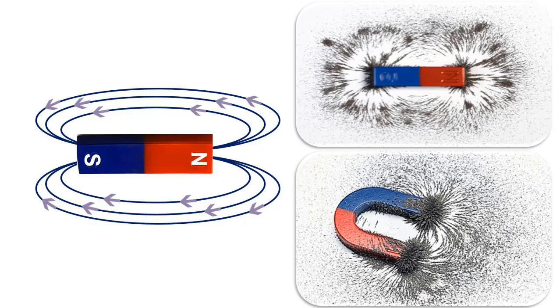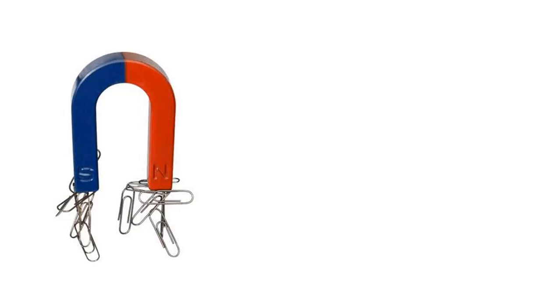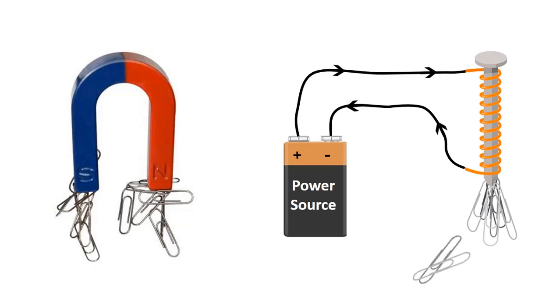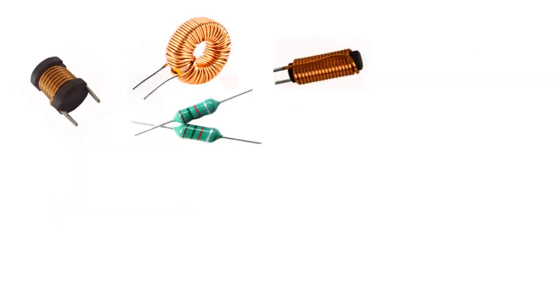If iron powder is scattered around the magnet, the powder is collected on magnetic field lines that move from the N pole of the magnet to the S pole. Just as a magnet with a fixed magnetic field attracts paper clips, it also attracts the paper clips around it when voltage is applied to the coil structure created with copper windings around a nail.